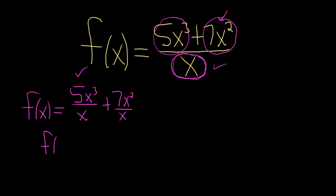Now we can simplify. So f of x is equal to — x cubed over x, we lose one copy of x, so we're left with 5x squared — plus x squared over x is just x, so 7x.